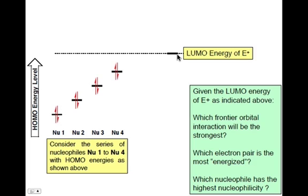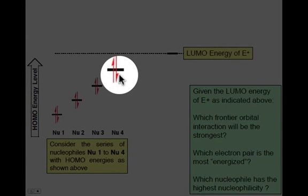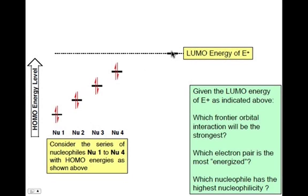Got it? The one that has the strongest overlap, energy-wise, is indeed going to be nucleophile 4. It's closest in energy to the energy of our LUMO, so therefore the strongest interaction is indeed going to be between nucleophile 4 and this general E+. The electron pair of our nucleophile 4 is the most energized, is the highest in energy, making it the least stable of these four.